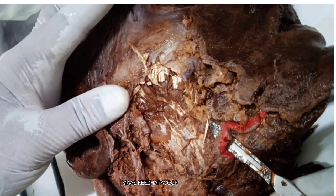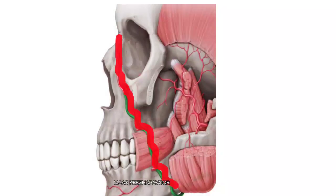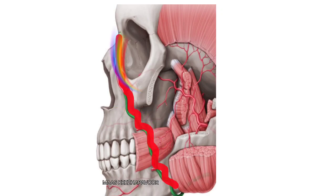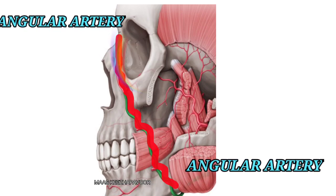It runs upwards and forwards, 1.5 cm lateral to the angle of mouth, then runs deep to the nasolabial furrow. Finally, it reaches the medial angle of the eye. The terminal part of the artery is called the angular artery.